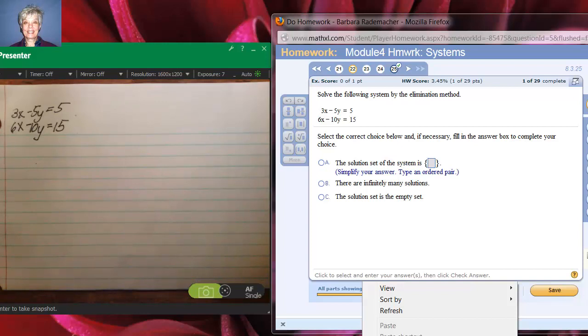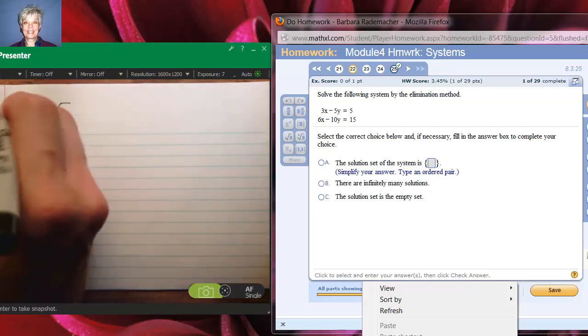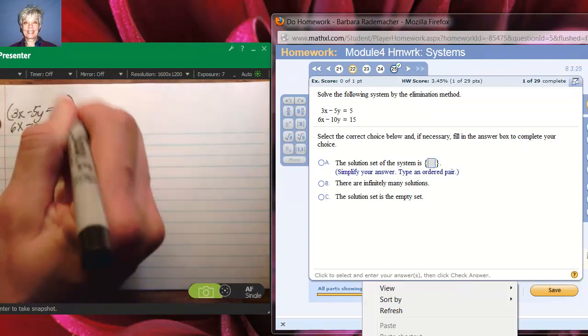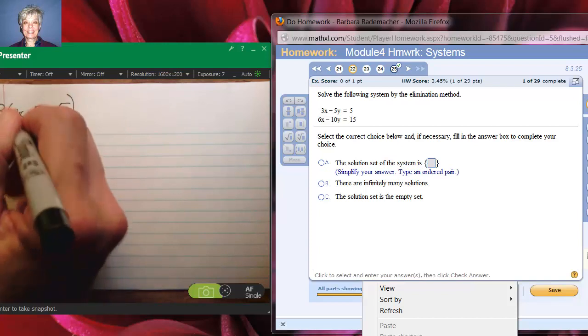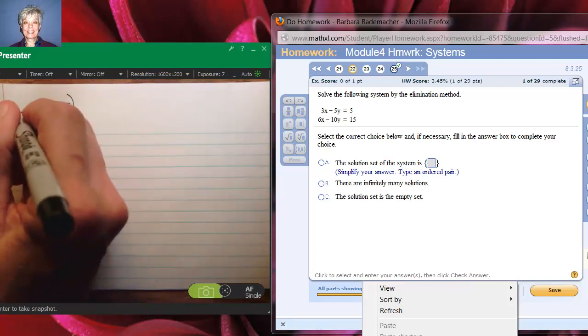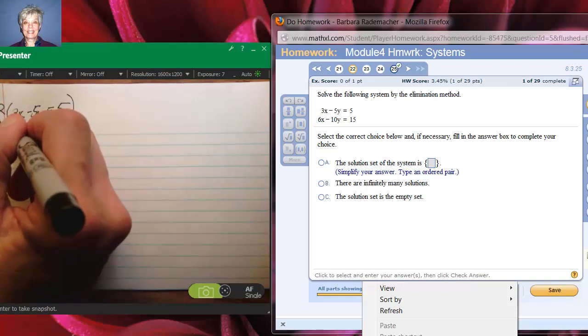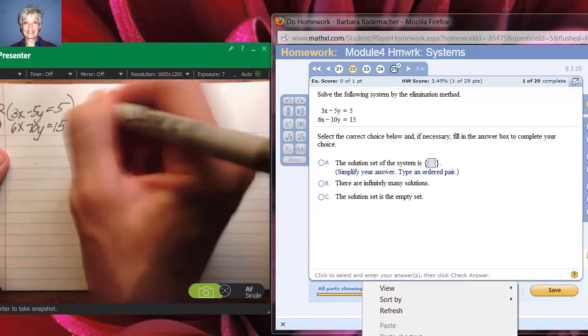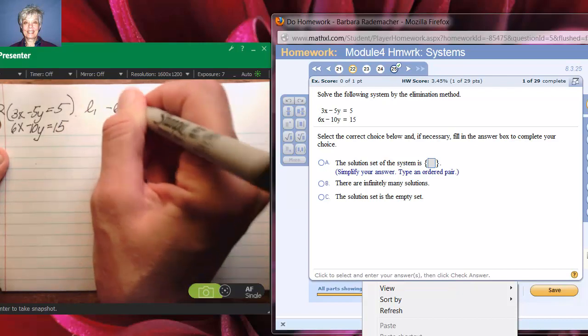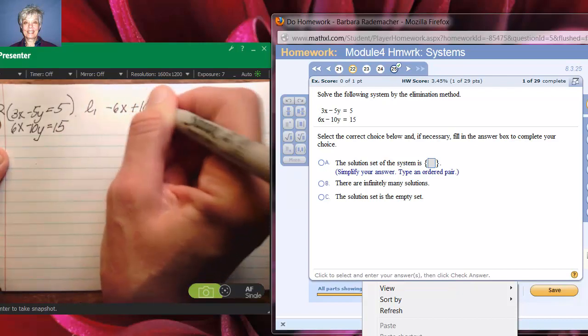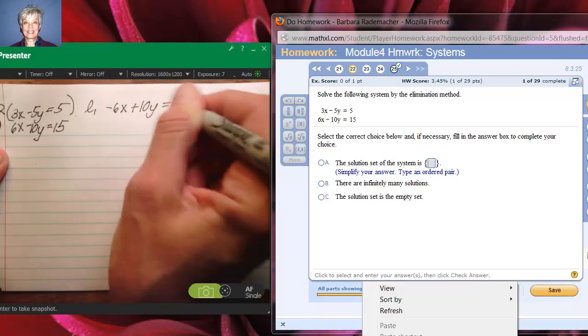If I multiply the first line by negative 2, I could get the x's to zero out because this would become a negative 6, add it to the positive 6, and I would get 0. So line 1 becomes negative 6x plus 10y equals negative 10.